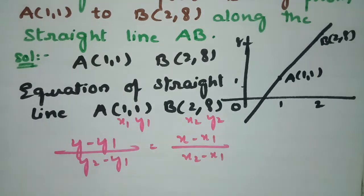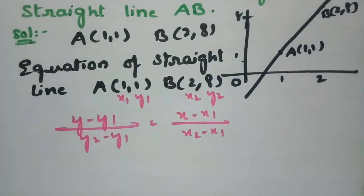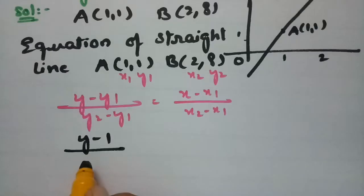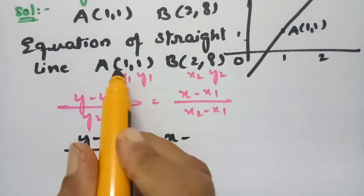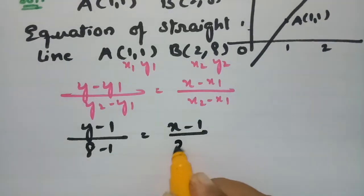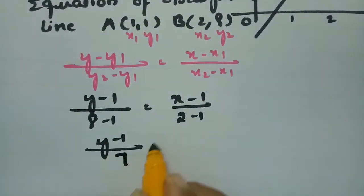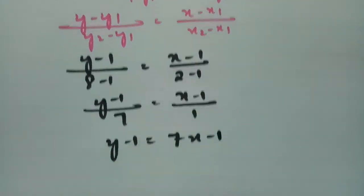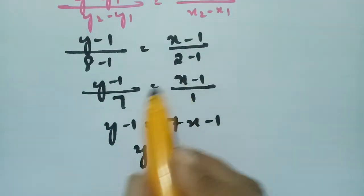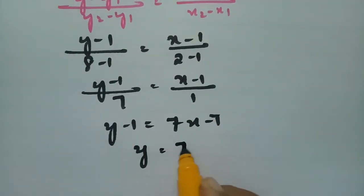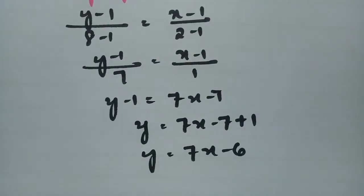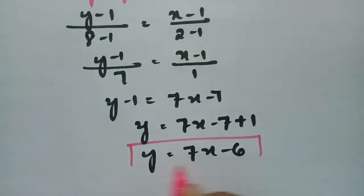Substituting the values: (y − 1)/(8 − 1) = (x − 1)/(2 − 1), which gives (y − 1)/7 = (x − 1)/1. So y − 1 = 7(x − 1), meaning y = 7x − 7 + 1, therefore y = 7x − 6. Please remember this: y = 7x − 6.